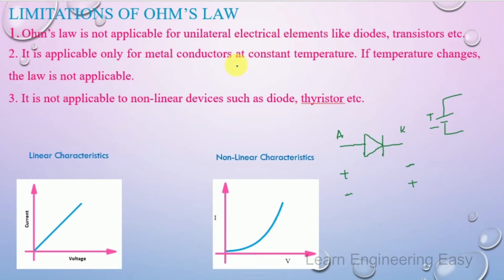The second limitation is that Ohm's Law can only be applied to metal conductors at constant temperature. It cannot be applied to semiconductor devices.